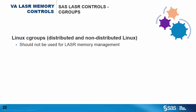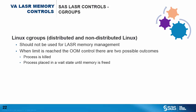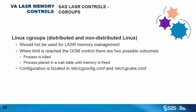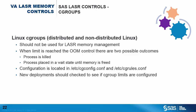The final control where memory can be limited is using Cgroup limits — however, Cgroups should never be used to limit memory for LASR servers. If enabled and a limit is exceeded, there are two possible outcomes: either the process is killed by the out-of-memory control, or the process is placed into a wait state until more memory becomes available. Both outcomes are disastrous for an in-memory server, so Cgroups should never be used for LASR server memory management. The configuration of Cgroups is located in /etc/cgconfig.conf and /etc/cgrules.conf. If planning a new deployment, it is worth checking to ensure that Cgroup memory management is not enabled.